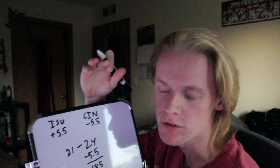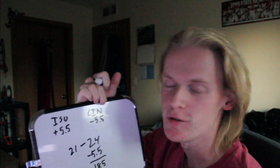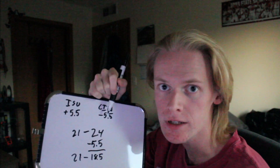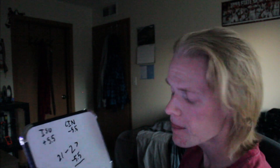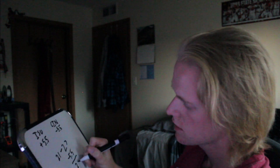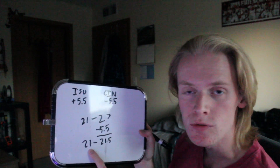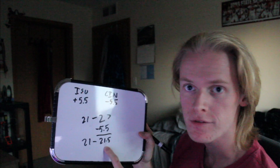This is a way to visualize the minus: it means Cincinnati has to win by at least five and a half. So you can imagine if the score was 21 to 27, your pick would have won because it would have been ISU 21 to Cincinnati 21.5.